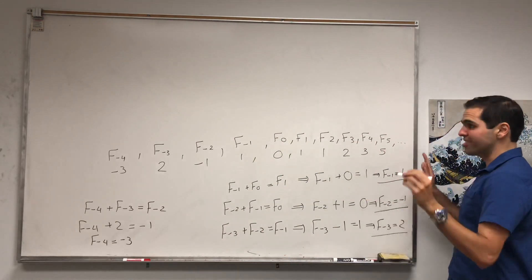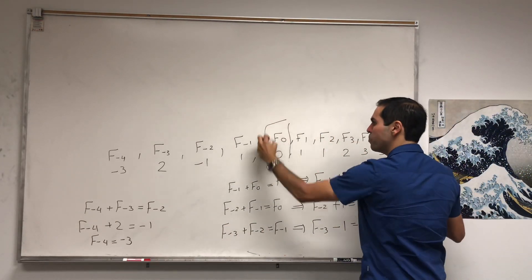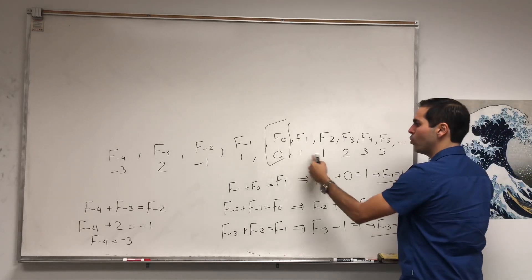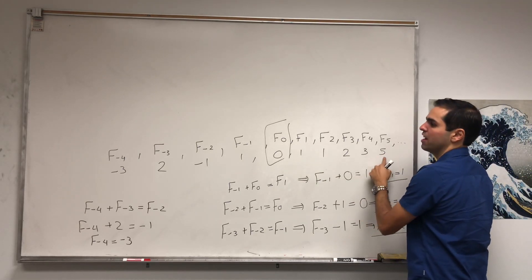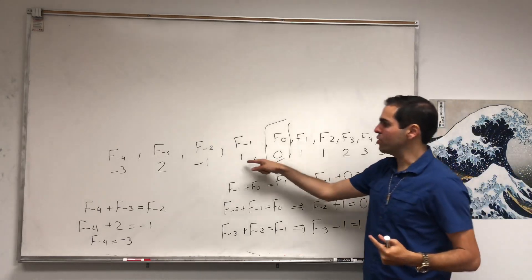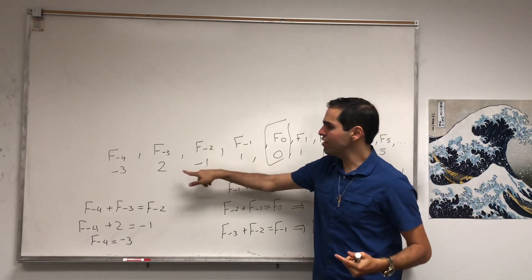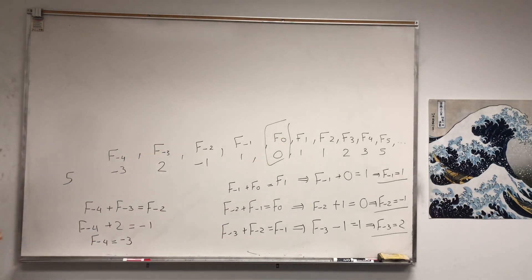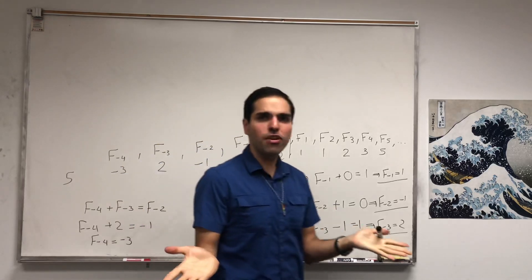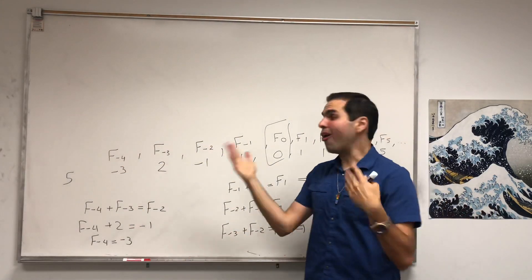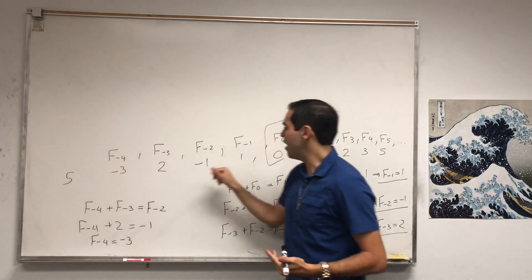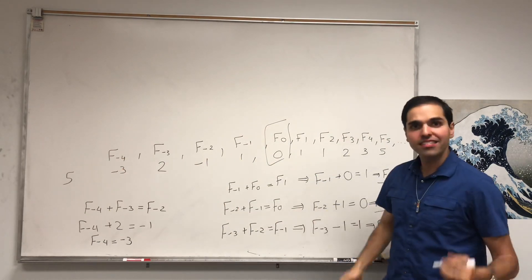Now let's look at the pattern. Suppose you start with F naught. If you go forward, you get 1, 1, 2, 3, 5. If you go backwards, you get 1, negative 1, 2, negative 3, 5. So it seems if you go backwards, you get the same Fibonacci sequence but alternating — almost like 1, 1, 2, 3, 5 but with alternating minus signs.